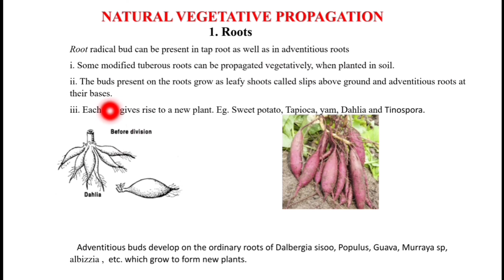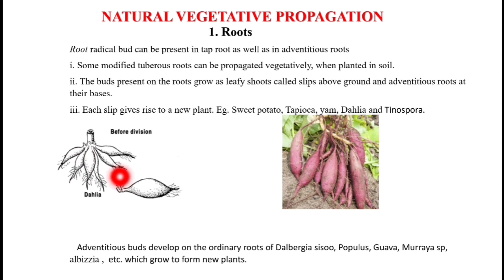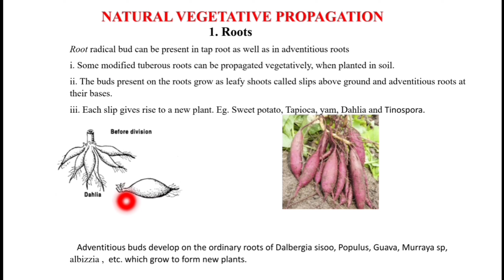We can see the buds developing on tuberous roots. This is Dahlia — this is a tuberous root. When the buds grow, they become leafy shoots and we call them slips, and at the base, adventitious roots develop. In this way, the slip will form a new individual.